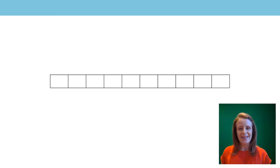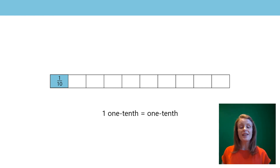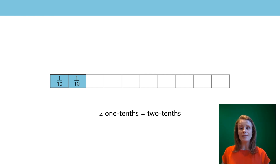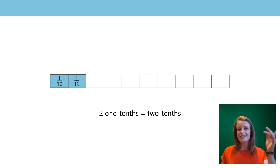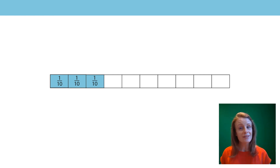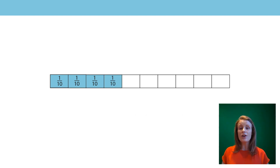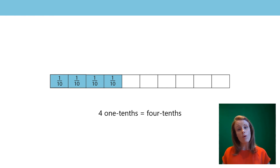Can you count them? Ten equal parts. So look at that first equal part — it's one tenth. We can say one one tenth, or just one tenth. As we go along, I'm going to do the same for each part of this bar. I want you to have a go saying it with me. Here's the next one — can you see two equal parts? I've now got two one tenths, or two tenths. Say that with me: two one tenths, or two tenths. And we go on — how many equal parts? I've got three one tenths, or three tenths. And again, how many equal tenths have I got? I've got four one tenths, or four tenths.